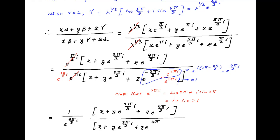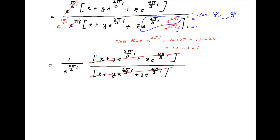Notice that the expression in square brackets in the numerator equals the expression in square brackets in the denominator — they cancel out. Therefore the value of this expression simplifies to 1/e^(2πi/3).